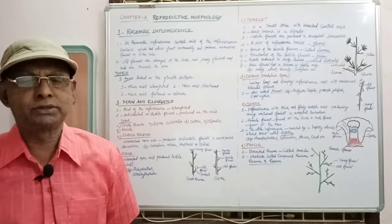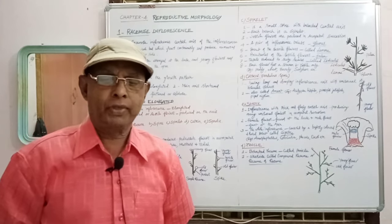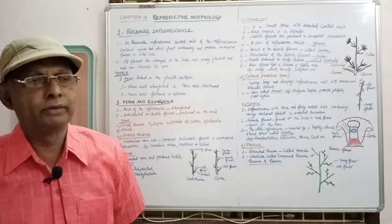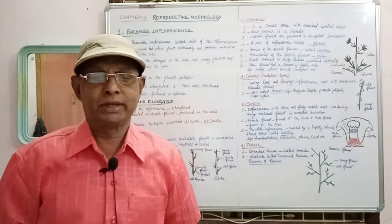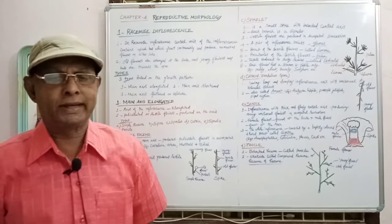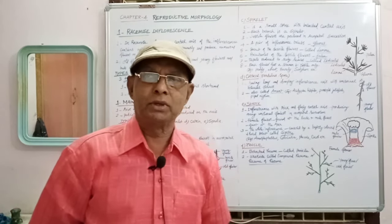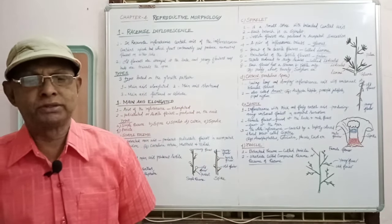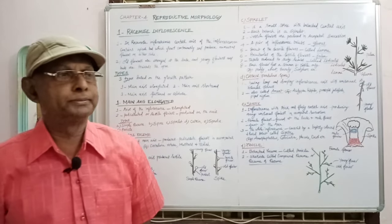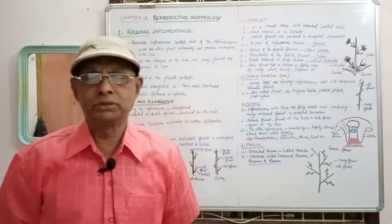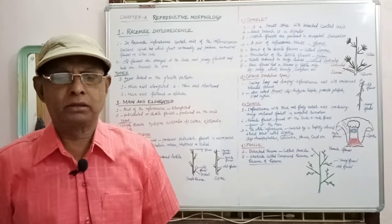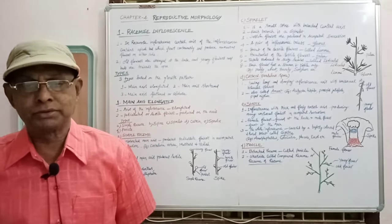Racimose type is classified into 3 types based on the growth pattern of the inflorescence axis: number 1, main axis elongated; number 2, main axis shortened; and number 3, main axis flattened or globose.